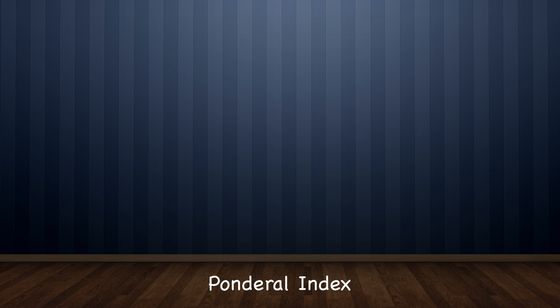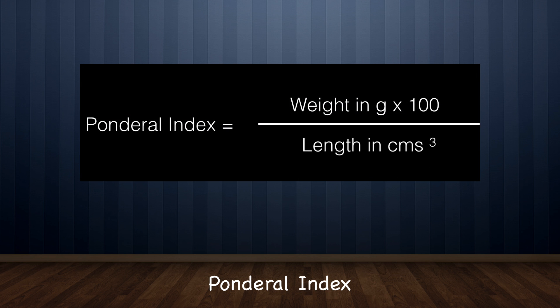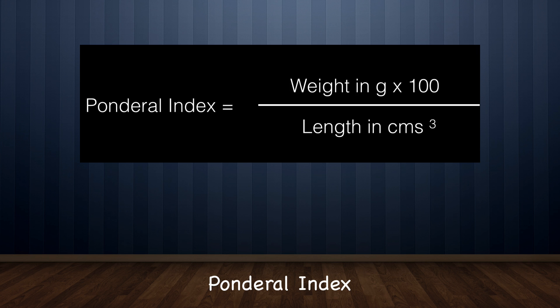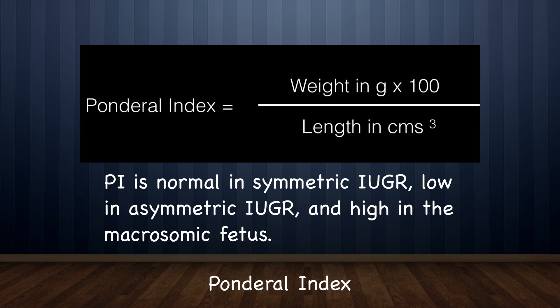What is ponderal index? Ponderal index (PI) is a widely used measurement of the infant's relative thinness or fatness, independent of race, gender, and gestational age. It is given by the formula: PI equals weight in grams multiplied by 100, divided by the cube of the length of the fetus. Normal PI values range between 2.32 and 2.85. The PI is normal in symmetric IUGR, low in asymmetric IUGR, and high in macrosomic babies.